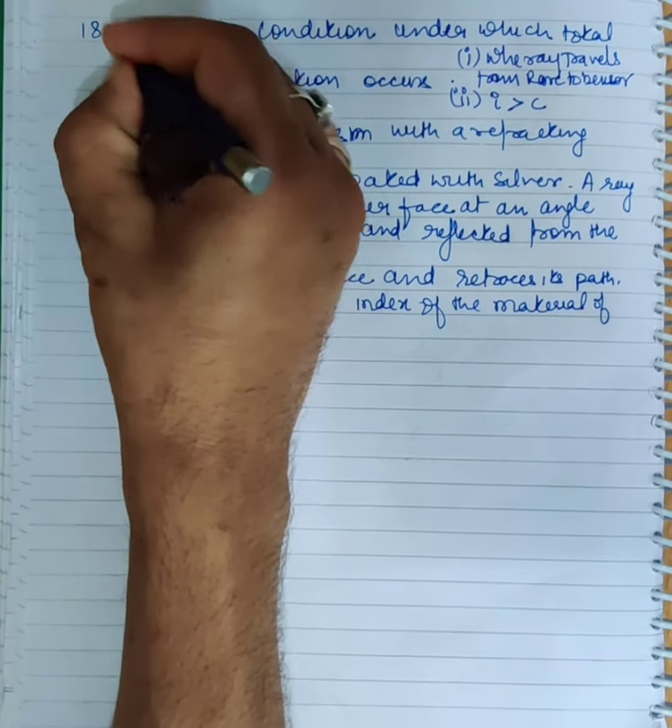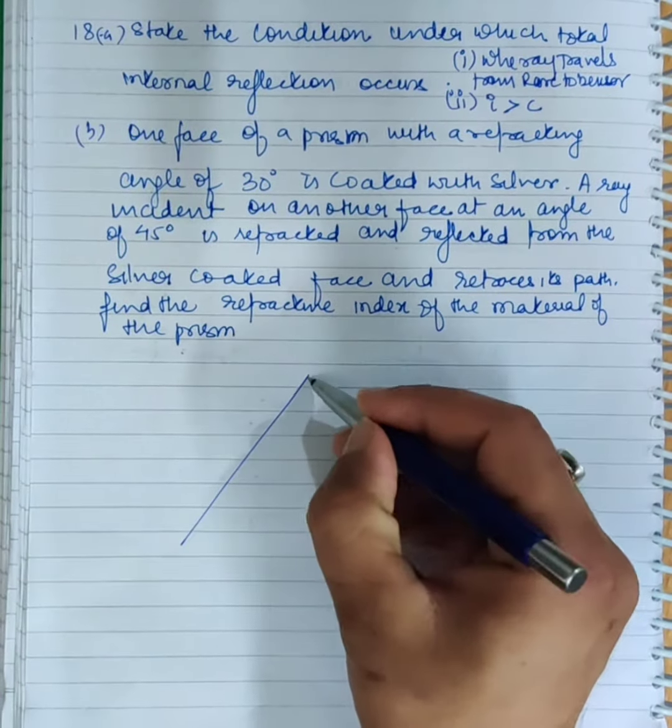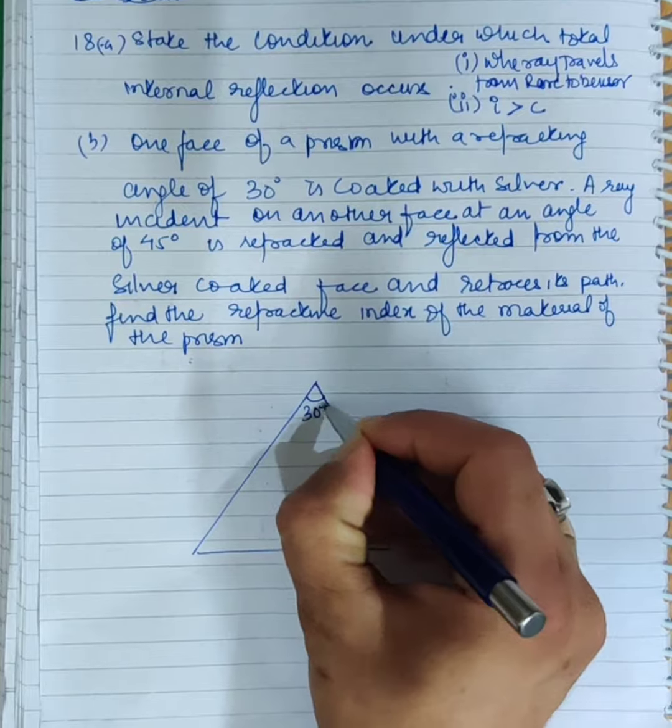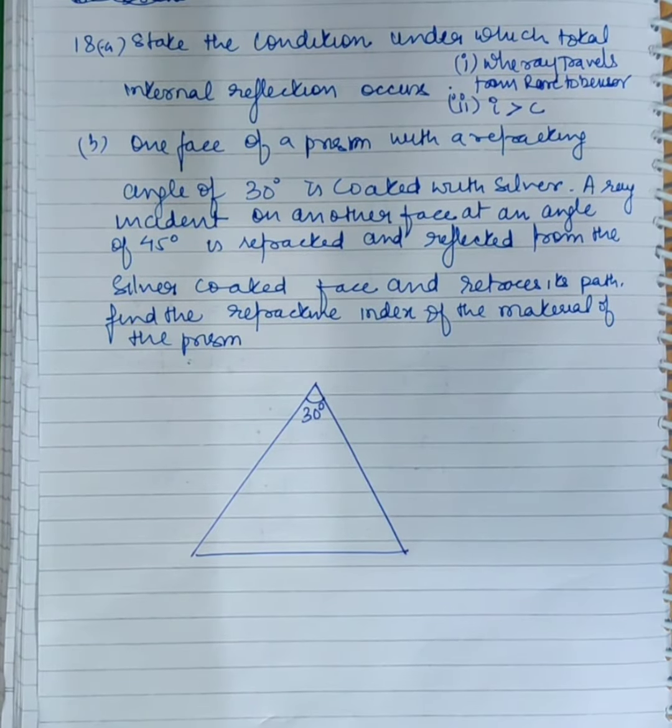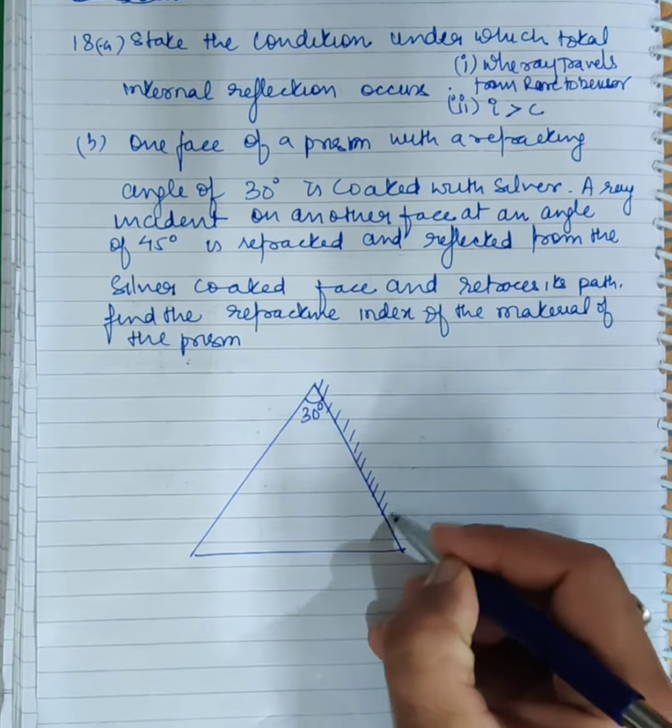The next part: one face of a prism with a refracting angle of 30 degrees is coated with silver. Silver means it's a mirror. So one face is a mirror.